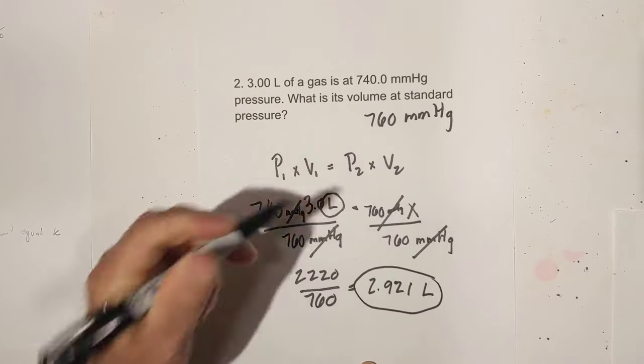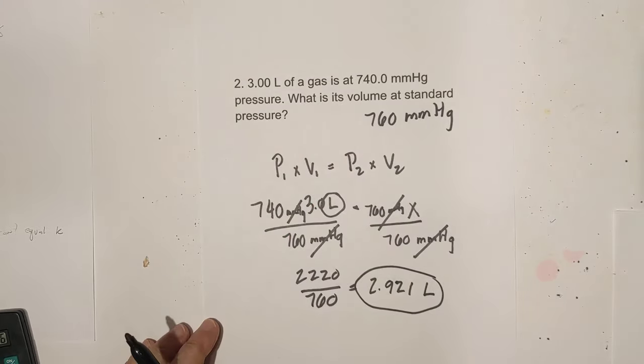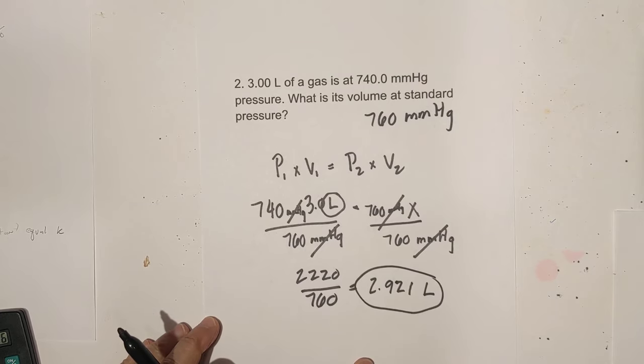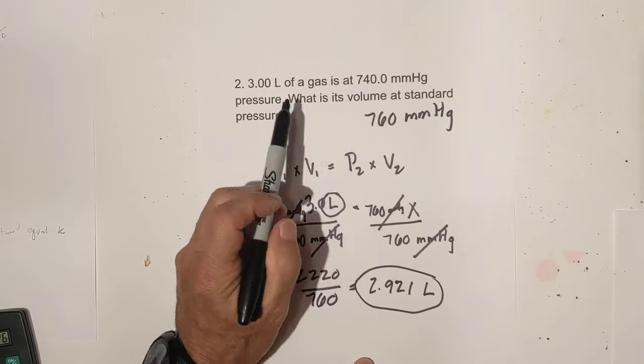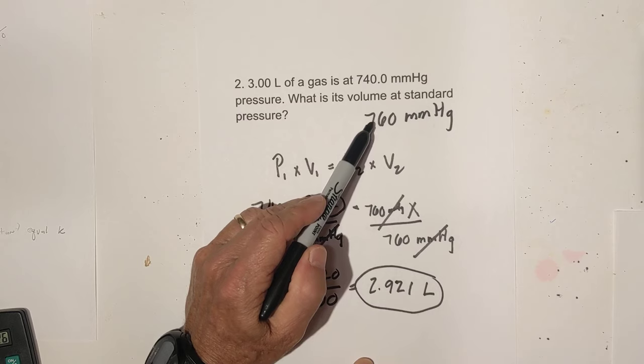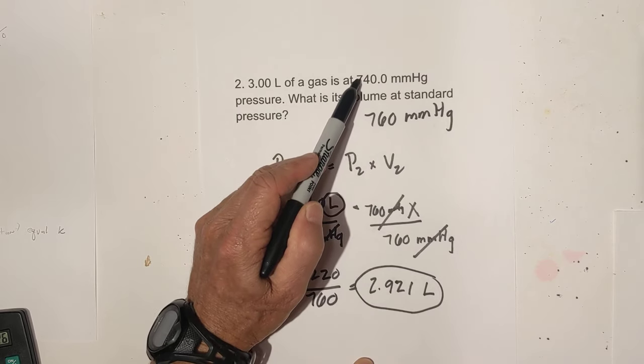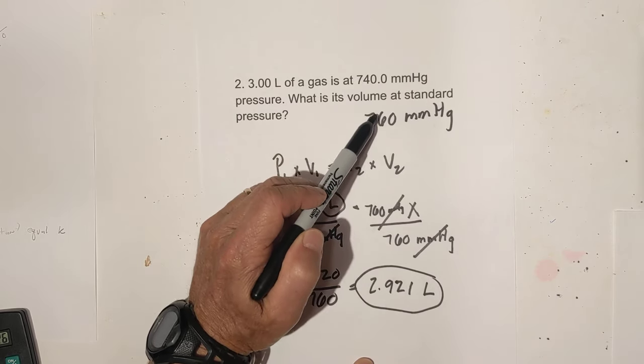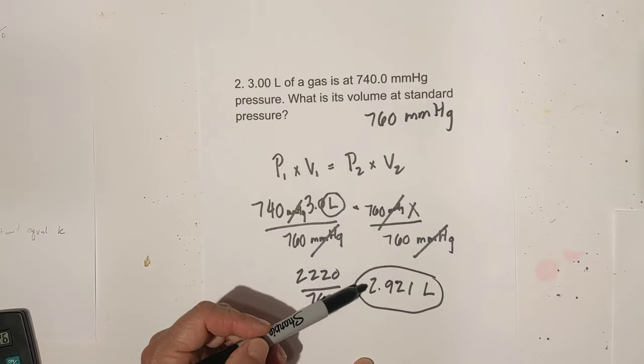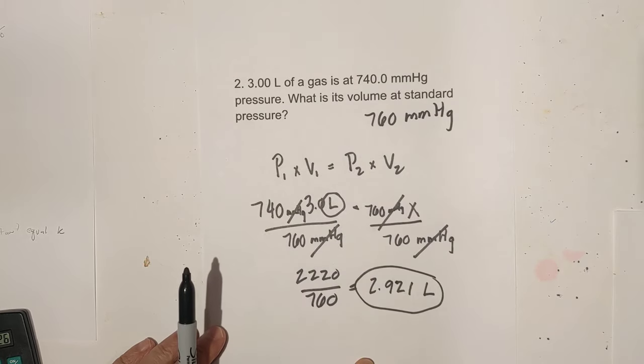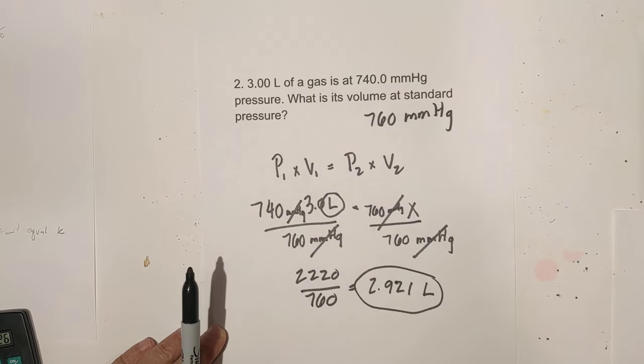But now let's see if this makes sense. Let's see if it is indeed an inverse relationship. Well, the standard is greater than the 740. So pressure is going up, and yes, volume did go down just a little bit. Let's look at the next problem.